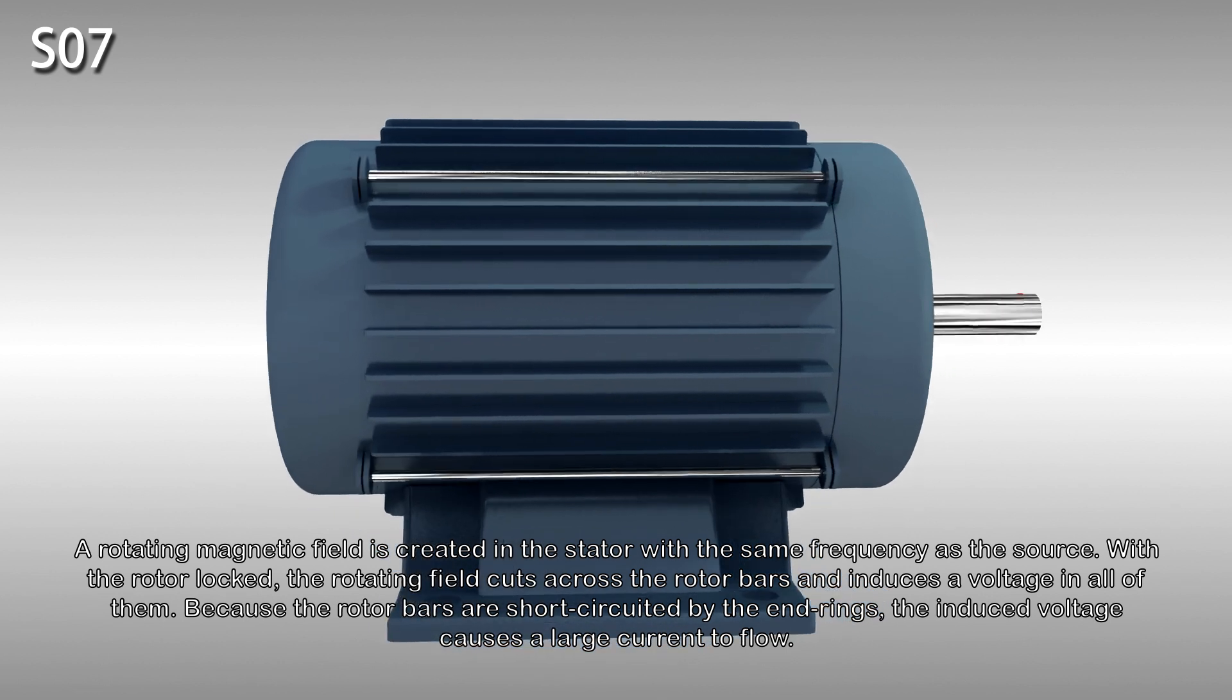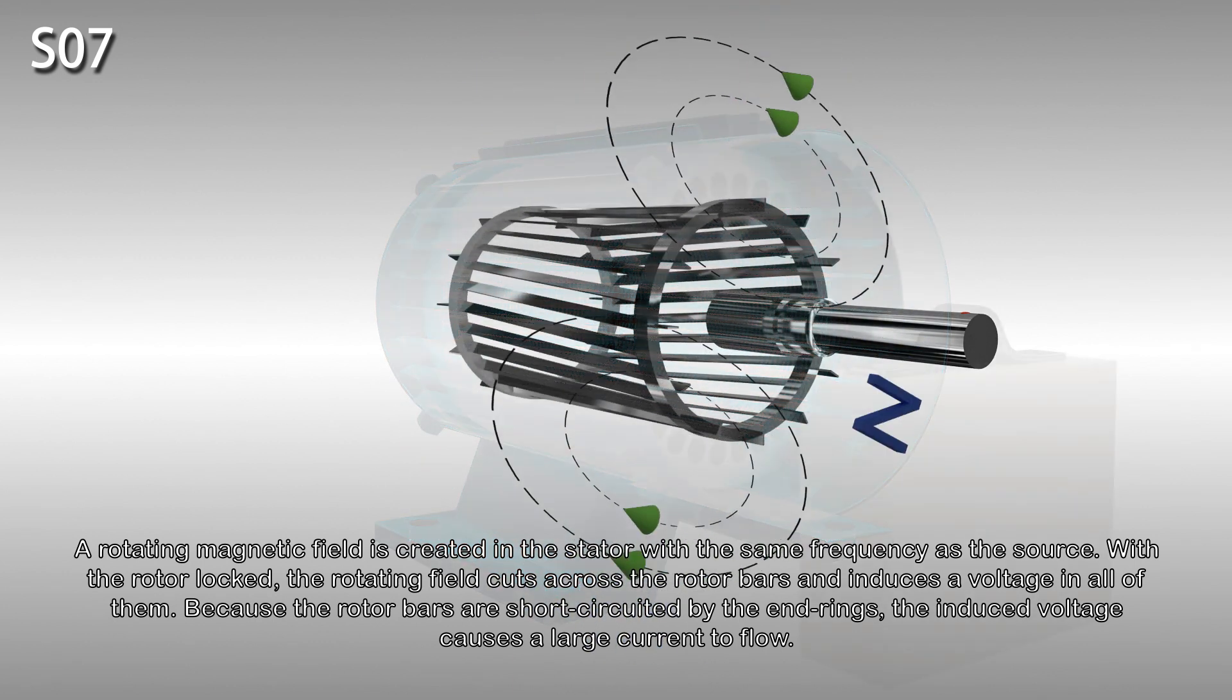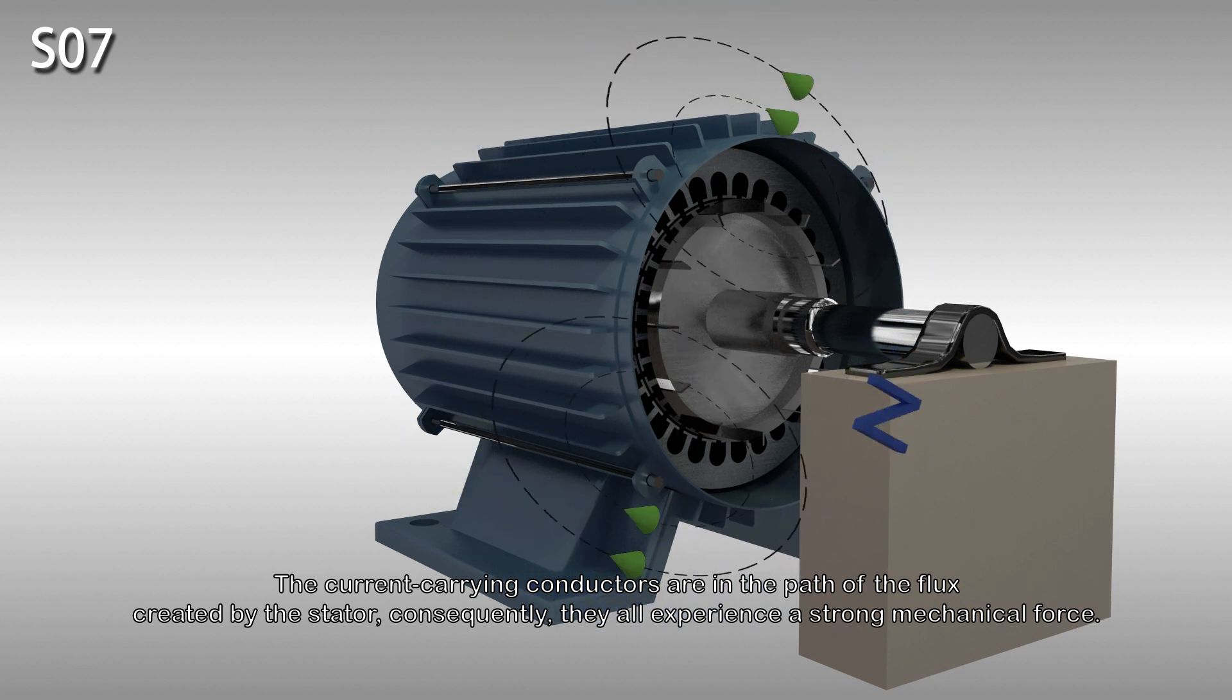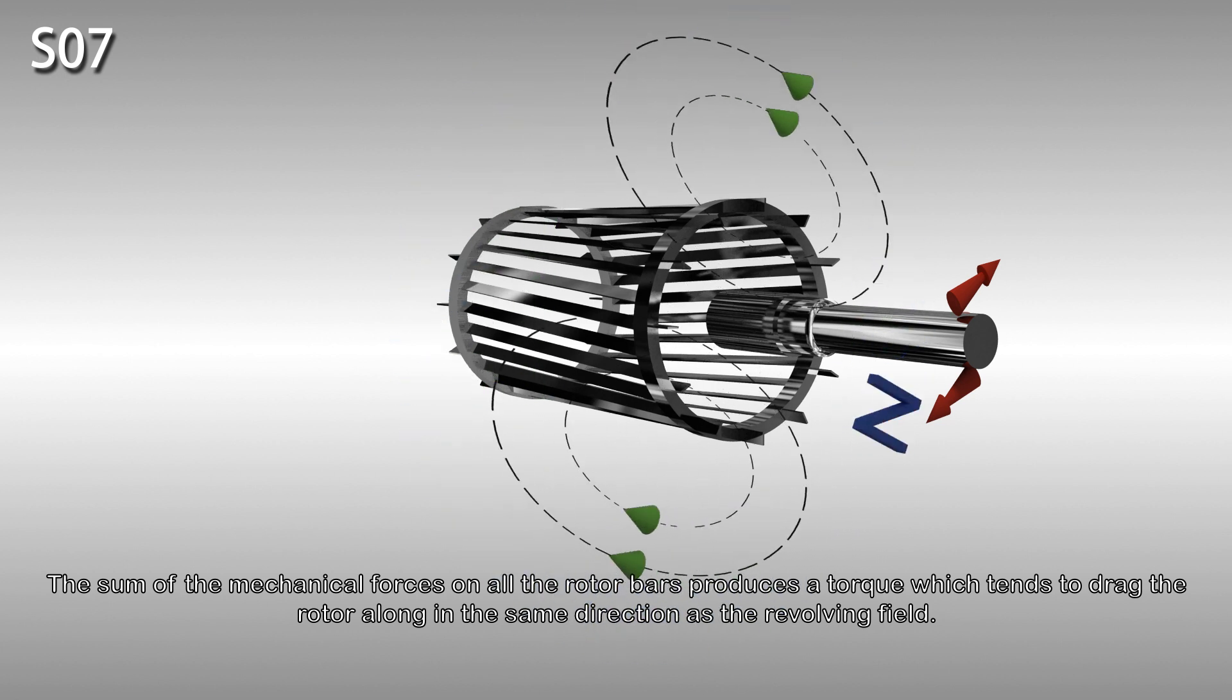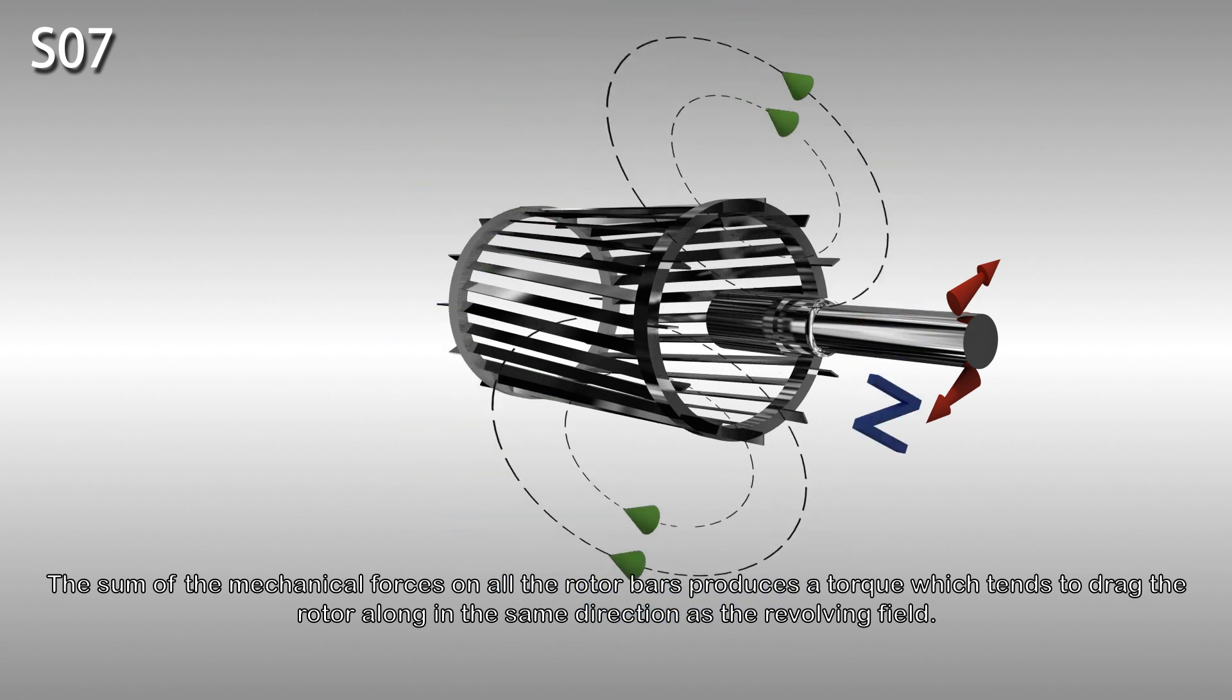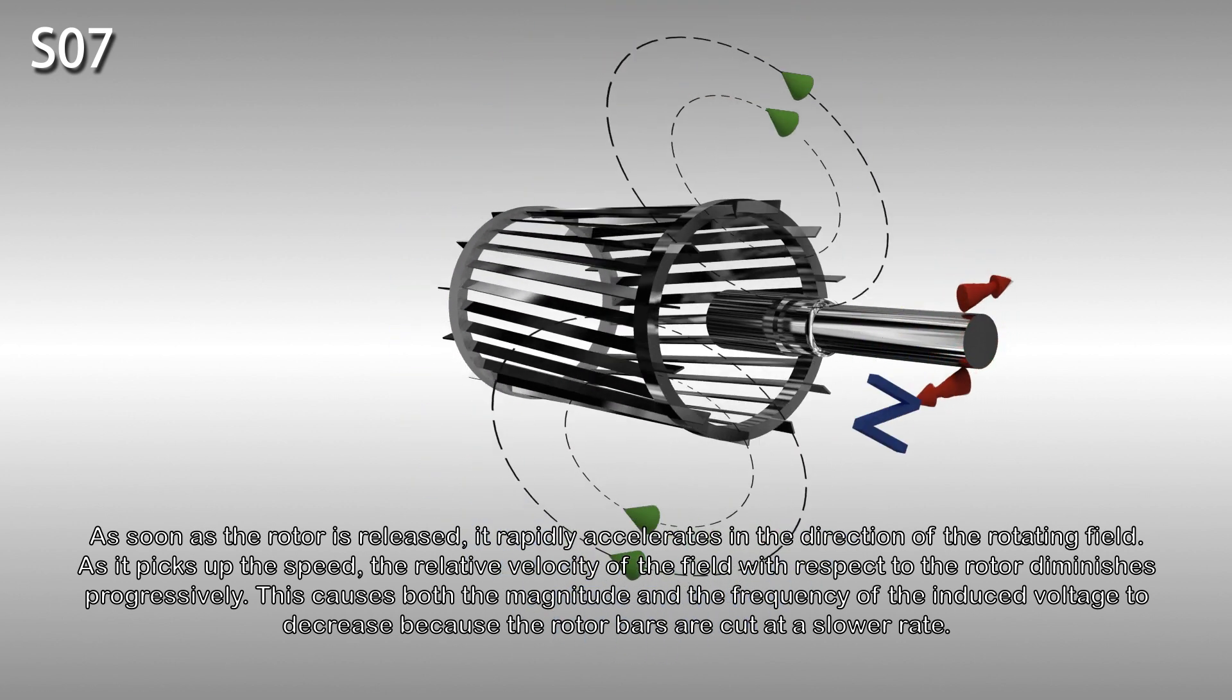A rotating magnetic field is created in the stator with the same frequency as the source. With the rotor locked, the rotating field cuts across the rotor bars and induces a voltage in all of them. Because the rotor bars are short-circuited by the end rings, the induced voltage causes a large current to flow. The current-carrying conductors are in the path of the flux created by the stator. Consequently, they all experience a strong mechanical force. The sum of the mechanical forces on all the rotor bars produces a torque which tends to drag the rotor along in the same direction as the revolving field. As soon as the rotor is released, it rapidly accelerates in the direction of the rotating field.